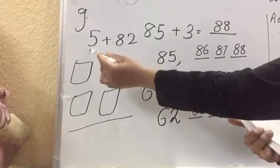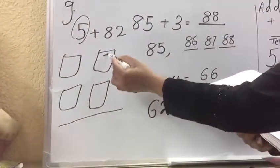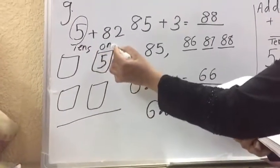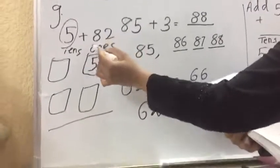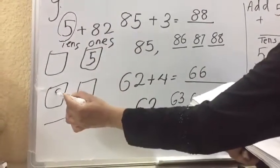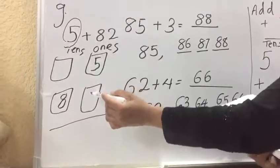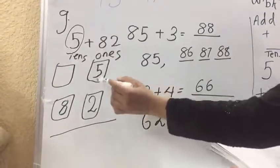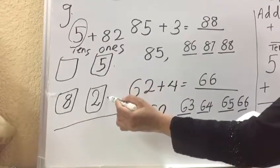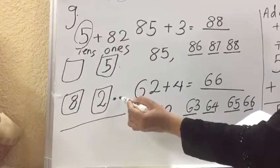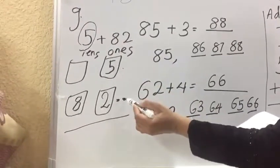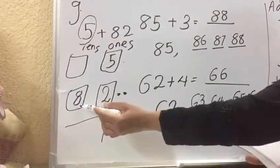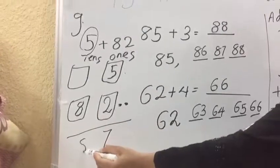We will write the 5 in the ones place. 82 we will write 8 in the tens, 2 in the ones. Now we will add 5 plus 2. After 5, 6, 7.